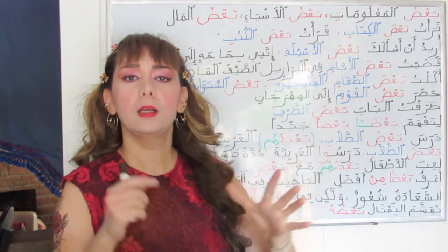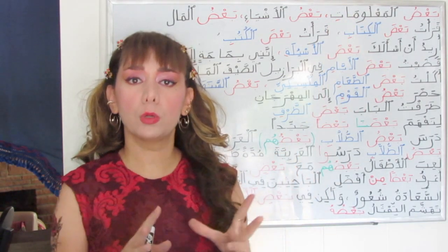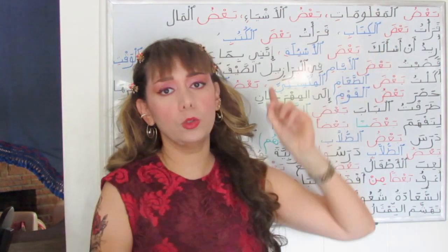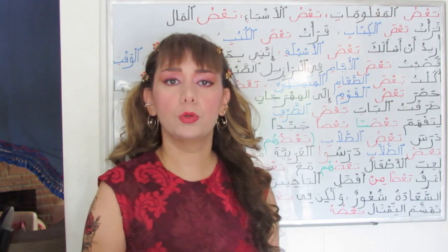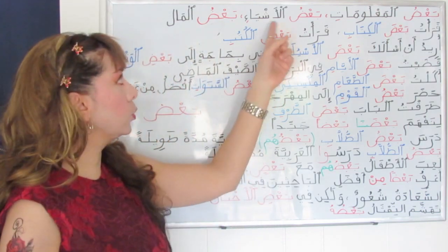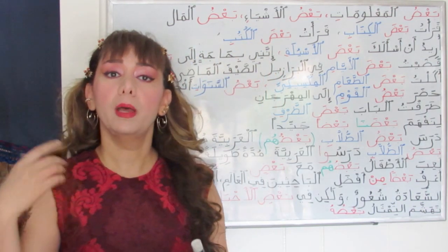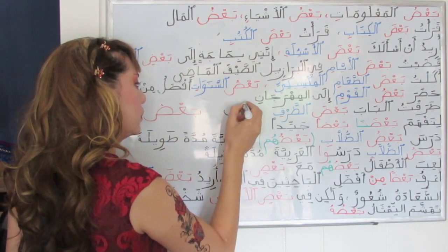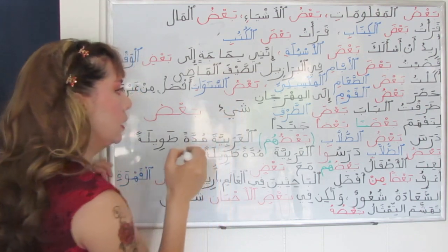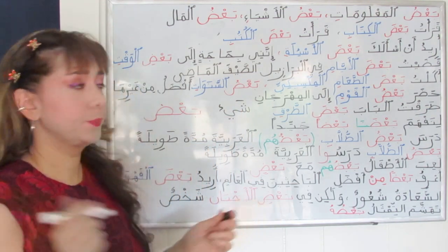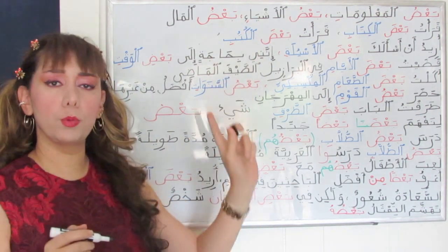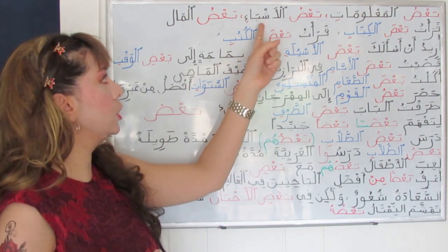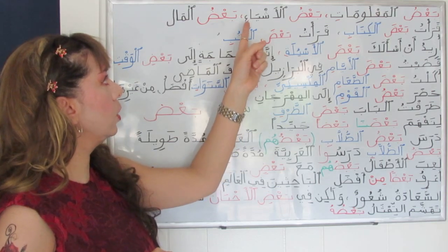And this is a sound feminine plural: ma'lumat. So ba'du here is followed by a definite plural. Ba'du al-ashya'i — some things. Al-ashya'i is the plural of shay', a thing. This is the broken plural of shay'. Ba'du al-ashya'i is in the genitive case with the sign of kasra.